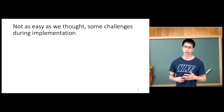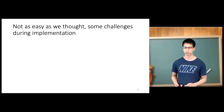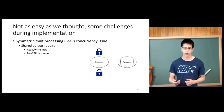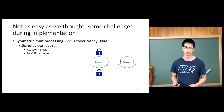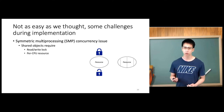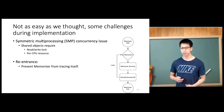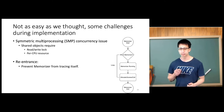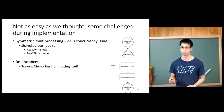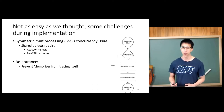The design might sound simple, but it was really not as easy as we thought. We faced challenges like the SMP concurrency issue, because we have objects shared among different cores, leading to race conditions and locks. The solution is to put a read-write lock on the shared object or make the resource per-CPU. Another interesting challenge is the re-entrance issue. Memorizer itself has allocations and function calls inside it, but Memorizer also wants to trace those allocations and calls, which would cause an infinite loop. So we have to put a monitor flag before entering Memorizer to make sure we are not going into this infinite loop.